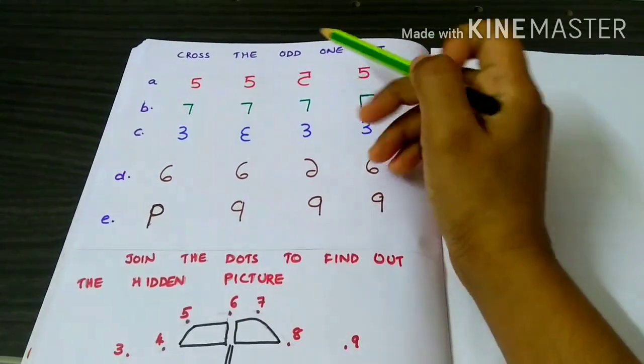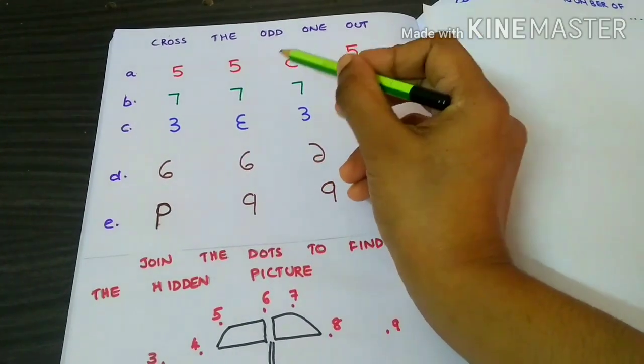Cross the odd one out. Cross the odd one out. 8, 10.